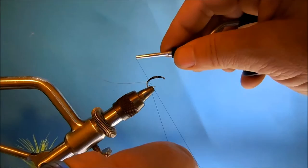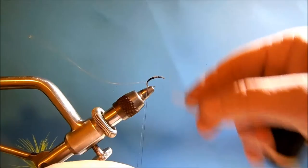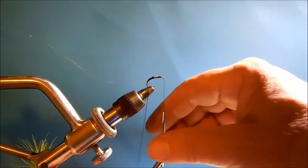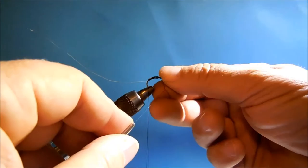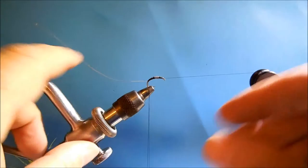The next stage is, we'll create a dubbing loop. And bring that thread to the front of the fly. We'll just have that held there to prevent that all twisting up. We'll pop a couple of half hitches in there. And we'll rest the bobbin on our bobbin rest.